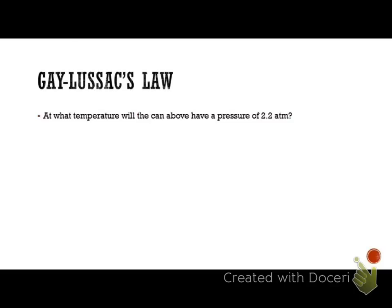In this one, it says, at what temperature will the can above have a pressure of 2.2 atmosphere? So this is a continuation on the previous problem. From the previous problem, we said that P1 was 1.2 atmosphere. We said that this will be our P2, what they gave us. Our T1 temperature, because we're looking for T2 now, because it's saying, at what temperature would it be above 2.2? So T1 from the above problem was 323K, or Kelvin.